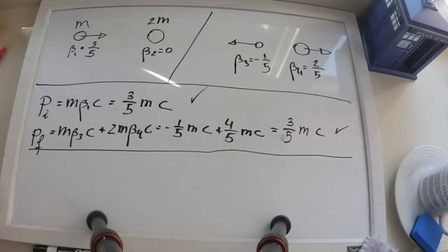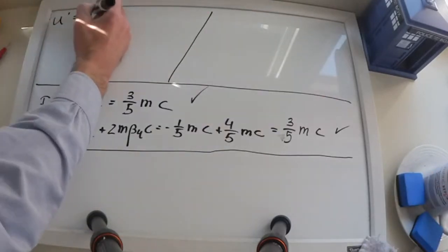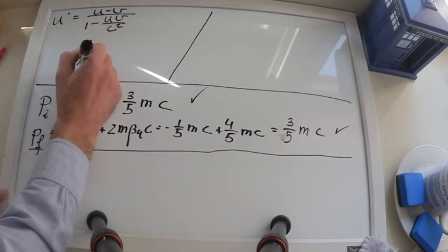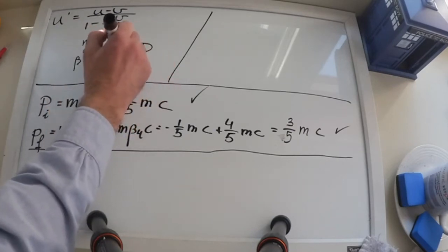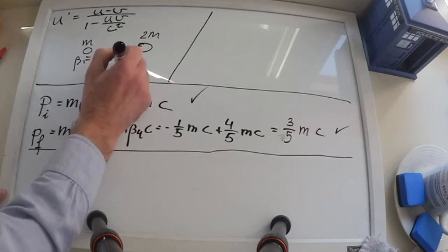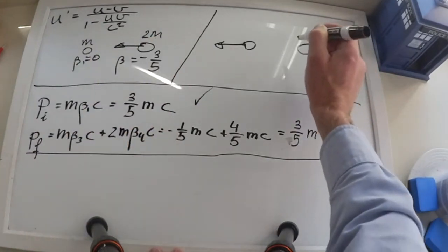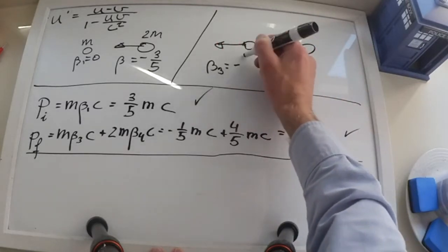Let's now use Einstein's transformation equations for the velocity to see how that reads in a reference frame moving with particle 1. In that reference frame, it is particle 1 that is at rest and particle 2 that is moving with 3/5 of c to the left.